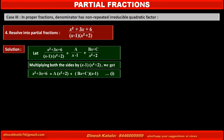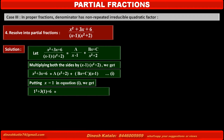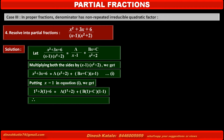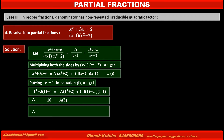To find the value of A, we cancel terms of B and C by making (x - 1) = 0. Putting x = 1 in equation 1: 1² + 3(1) + 6 = A(1² + 2) + (B(1) + C)(1 - 1). Solving: 10 = A × 3. Therefore A = 10/3.